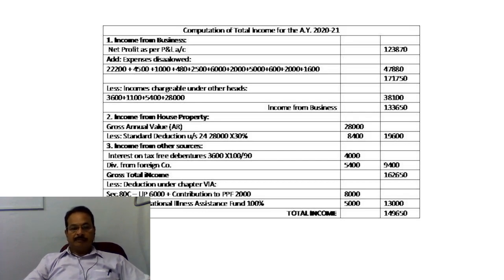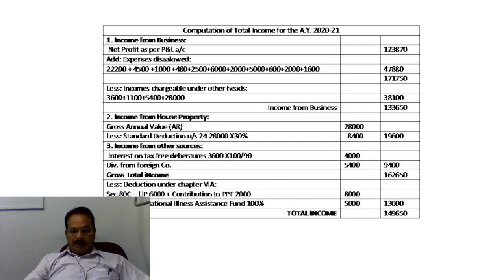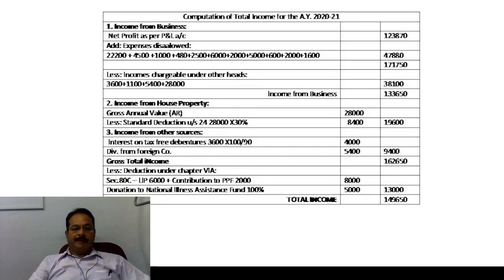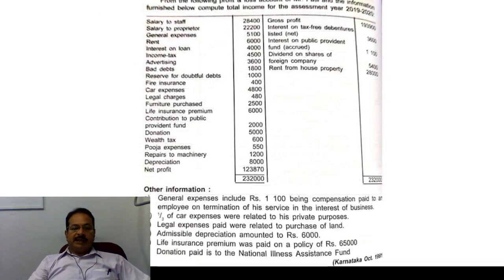Gross Total Income: 1,33,650 plus 19,600 plus 9,400 — total comes to 1,62,650. Less: deductions under Chapter 6A.